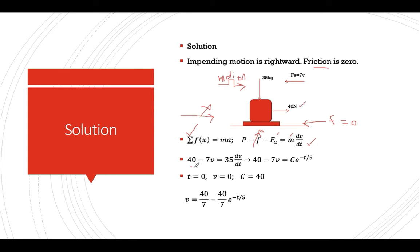So we are given, this is 40, and then 7 times the velocity. And then the mass is 35, so dv over dt. So this is variable separable. So you can have dv over 40 minus 7v, and then on the right-hand side you have 1 over 35 dt.